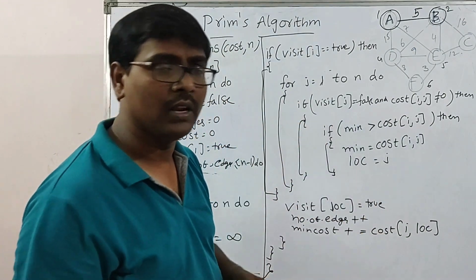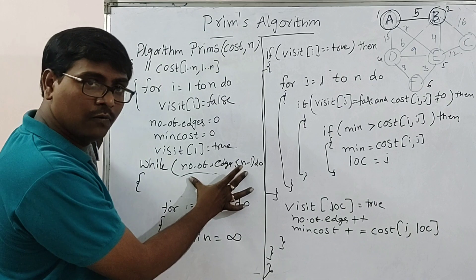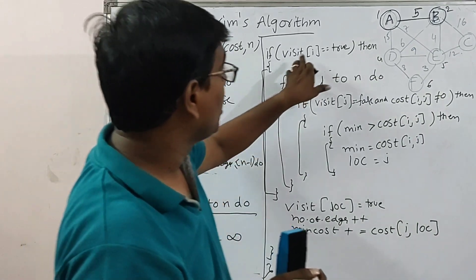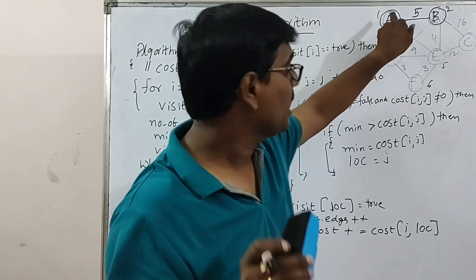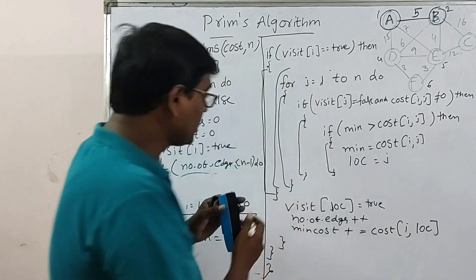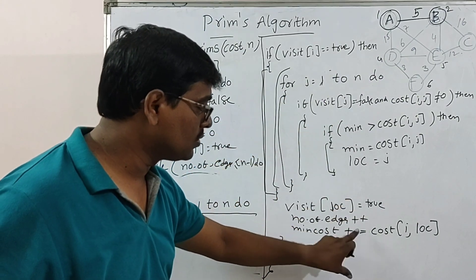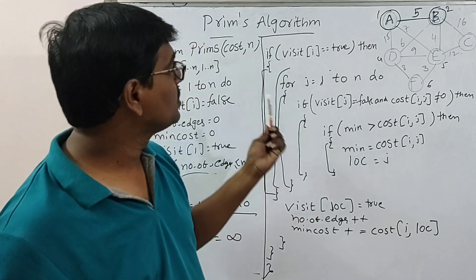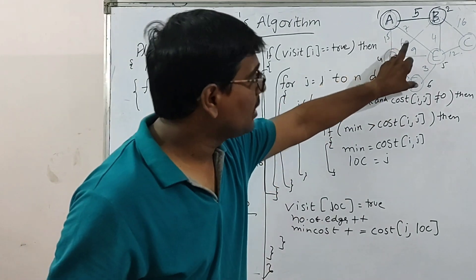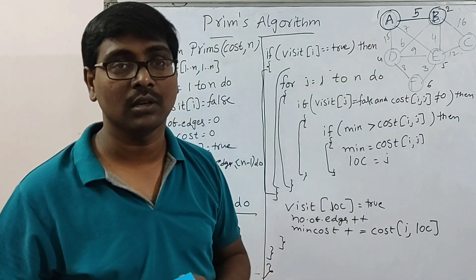This is Prim's Algorithm — very simple. First, mark all vertices as unvisited and repeat the loop N minus 1 times. This checks each vertex, ensures one vertex is visited, then identifies all edges and vertices with minimum cost, marks that vertex as visited, and adds the cost. By using Prim's Algorithm, we calculate the minimum cost spanning tree. The example is explained in another video — go through that video for a detailed example solution. Thank you very much.